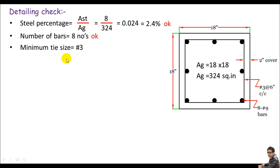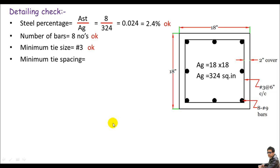Next, check the minimum tie size. The requirement is a #3 bar, and our column uses #3 ties — so we are okay. For minimum tie spacing, the requirement is the larger of 1 inch or one main bar diameter. Our main bars are #9, with diameter greater than 1 inch, so the minimum is governed by the bar diameter. Our actual spacing is 6 inches center-to-center, which exceeds the minimum — we are okay.